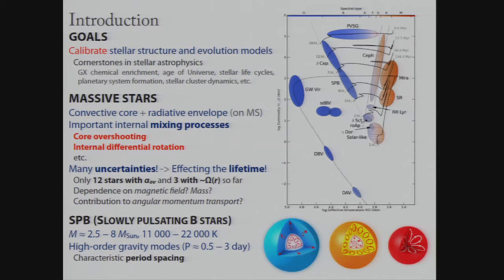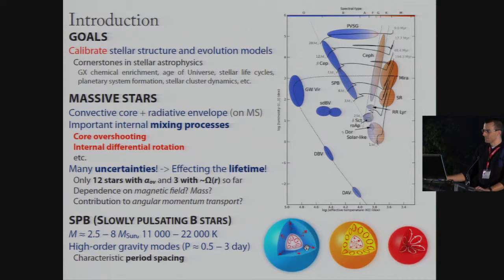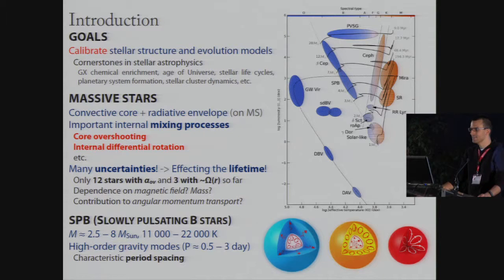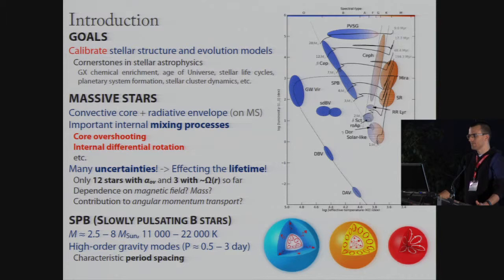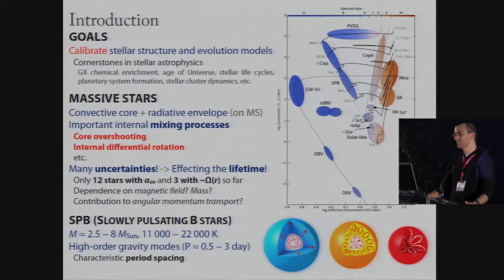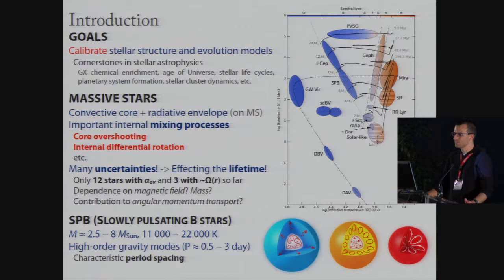Just to quickly sum up, our goal is to calibrate the stellar structure and evolution models, because these models are cornerstones in many fields of stellar astrophysics. We are looking at massive stars which have a convective core and a radiative envelope, and thus these stars have important internal mixing processes working inside, such as core overshooting or internal differential rotation. Although these effects have a large effect on the stellar lifetime, we still have many uncertainties.